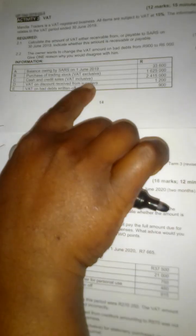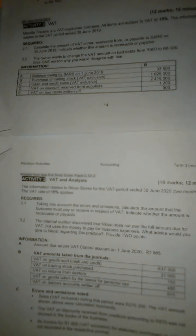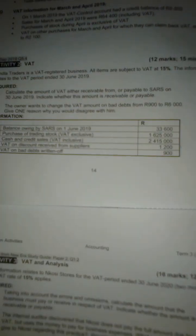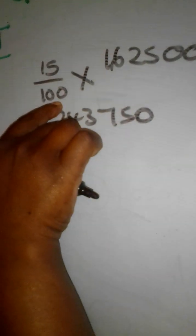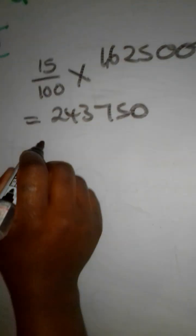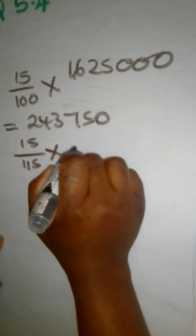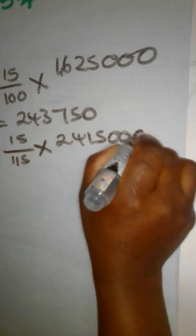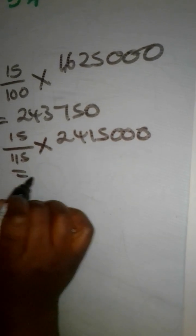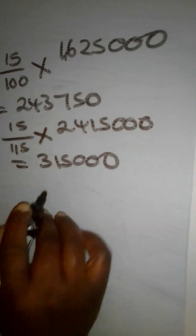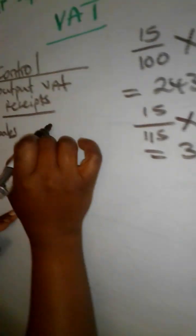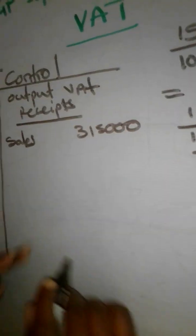Transaction C: cash and credit sales. Sales mean money is being received, so it becomes output VAT and is recorded on the credit side. The amount here is VAT-inclusive, so we use 15/115 multiplied by 2,415,000, which gives us 315,000. So our output VAT on sales is 315,000.